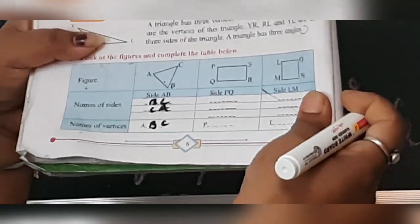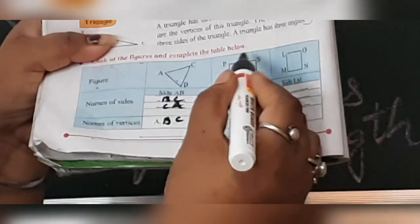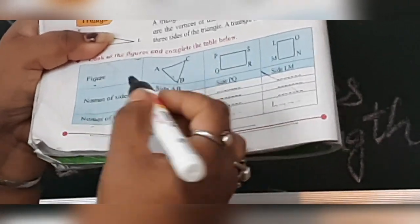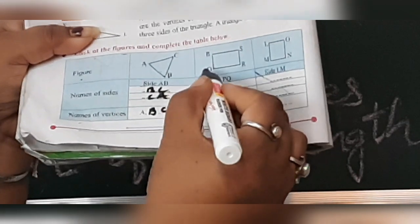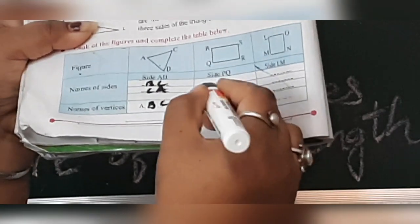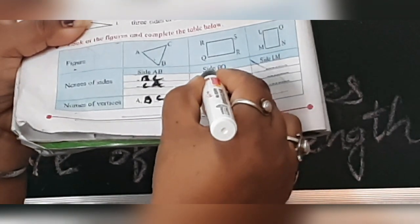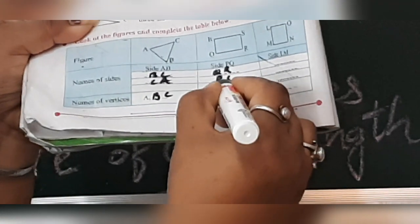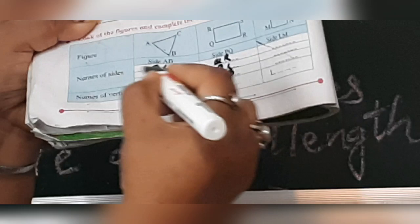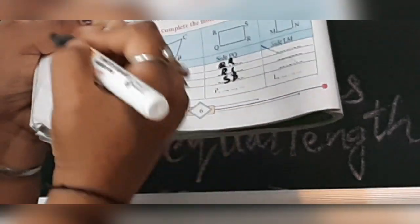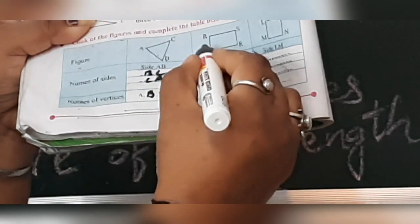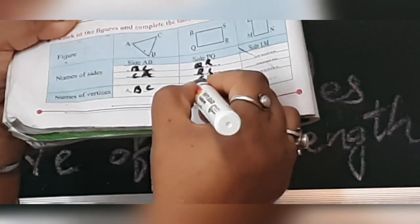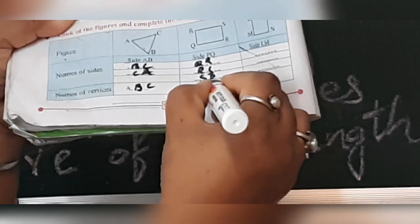Then, the second picture. Second figure you can see. So what is this figure? It is a rectangle. Sides are given. P, Q. So you have to write another sides. Q. Side Q R. R, S and S, P are the sides. Now, name of the vertices. What are those? P, Q, R and S are the vertices of the rectangle.